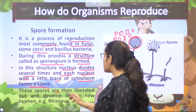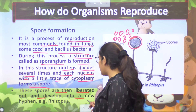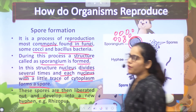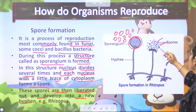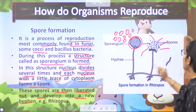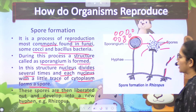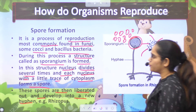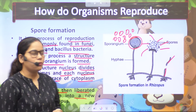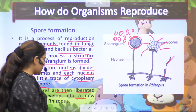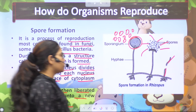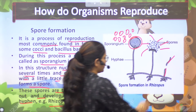These spores are then liberated out and develop into a new hypha. They go out and form new hyphae. They form new individuals of the fungus. The basic example is rhizopus, which has also been shown here.